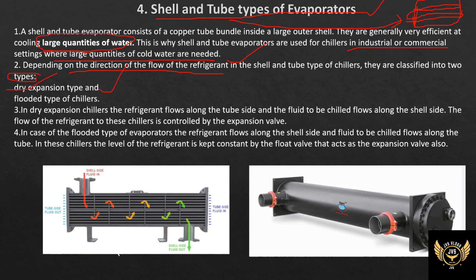There are two types: dry expansion type and flooded type. In the dry expansion type, the refrigerant flows through a tube inside the shell. The refrigerant absorbs heat from the water, and the liquid refrigerant converts to vapor refrigerant. The shell has an outlet for the cooled water. This is the dry expansion type.